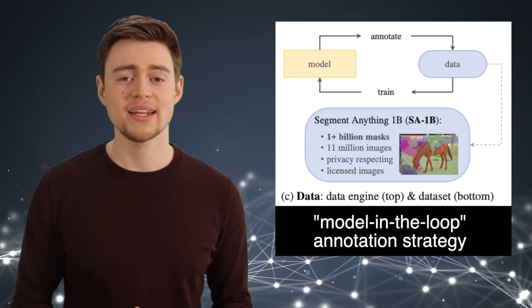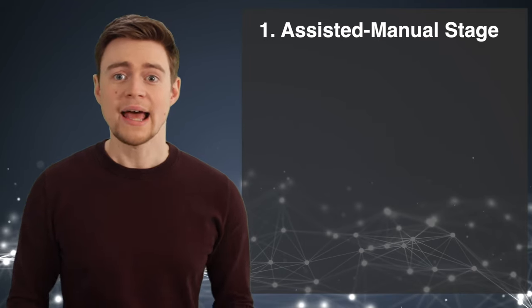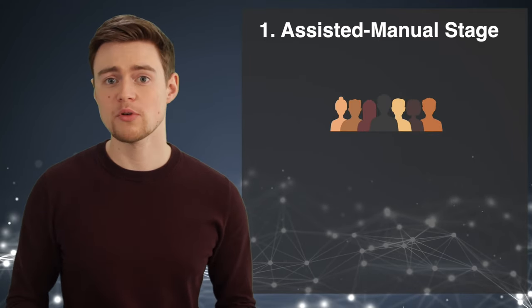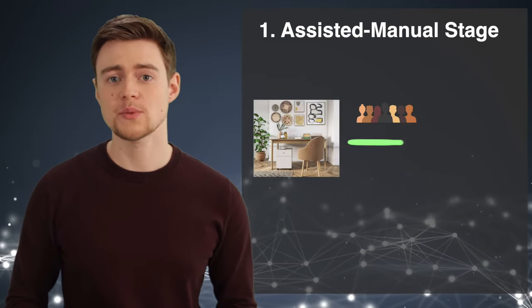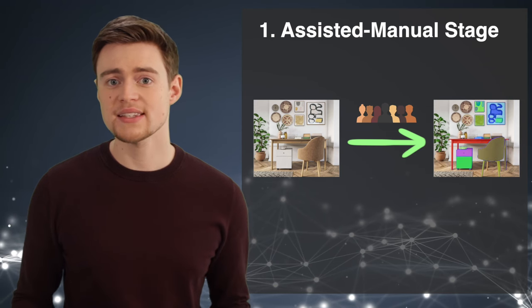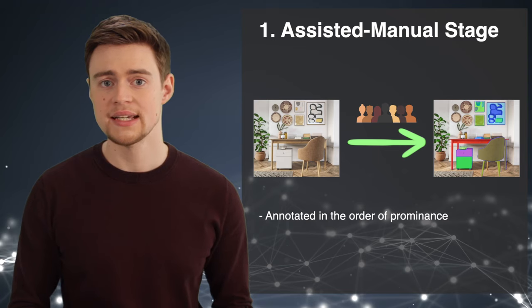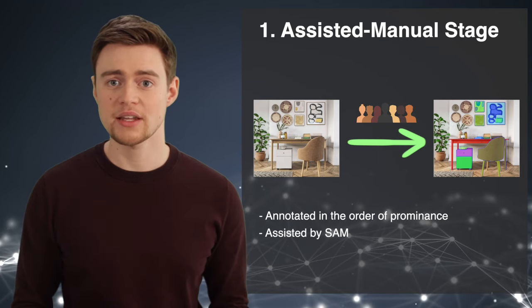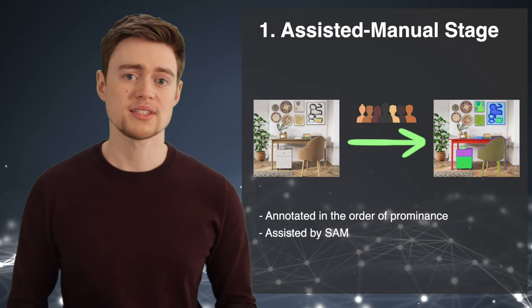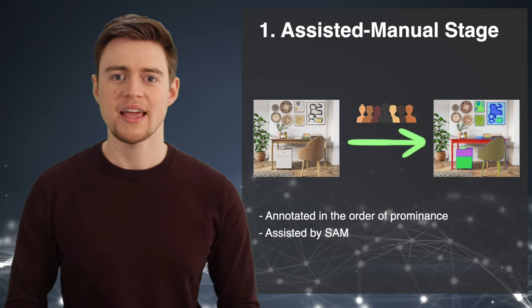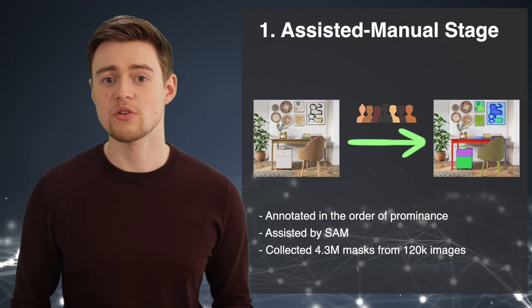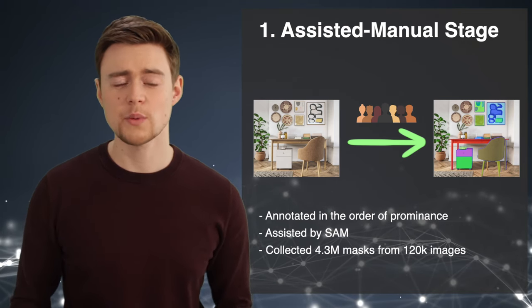Such large-scale data were not available for image segmentation before this work, so Meta built something called a data engine — a model-in-the-loop annotation strategy that collected training data in three stages. The first stage was called assisted manual. Meta hired a team of professional annotators to label images with segmentation masks, labeling any object they could find in order of prominence, assisted by a segmentation model previously trained on standard segmentation datasets. In this stage, the data engine collected over 4 million masks from 120,000 images.